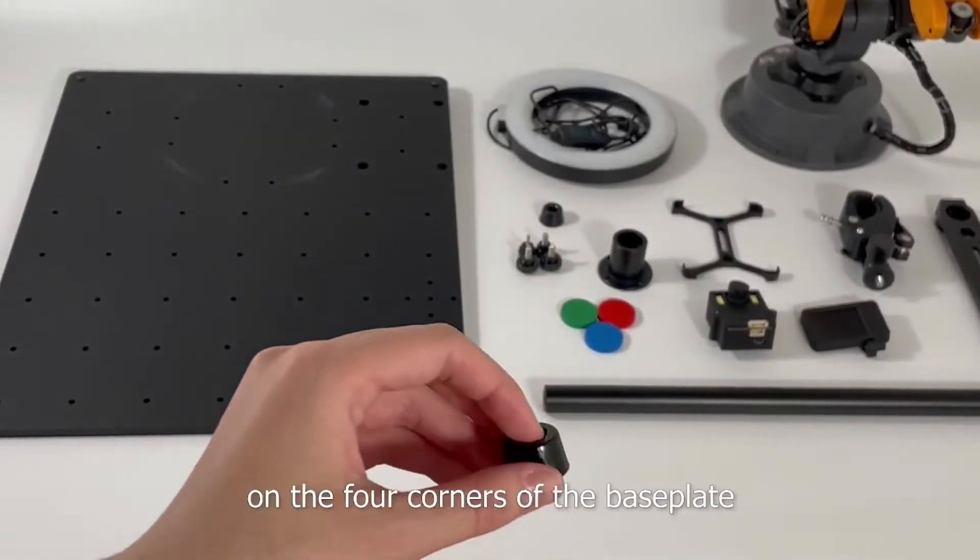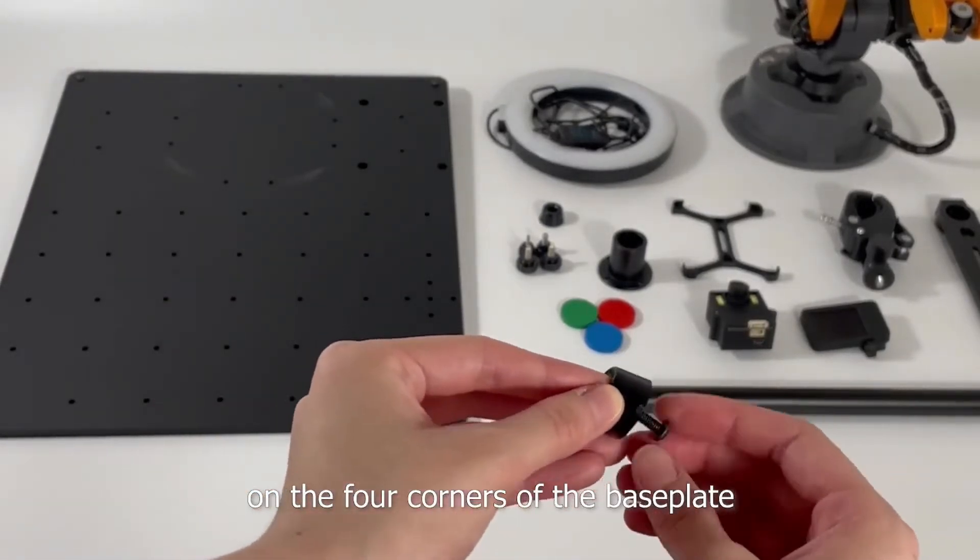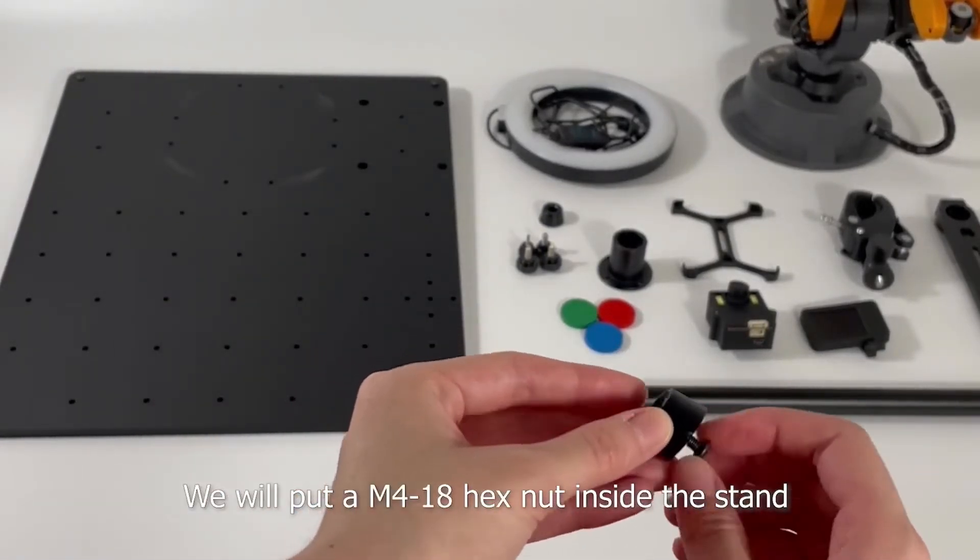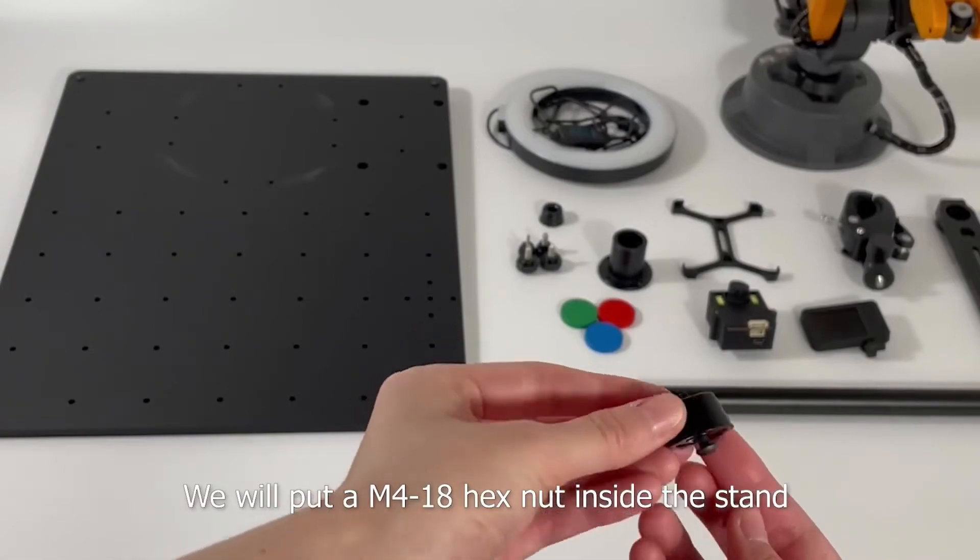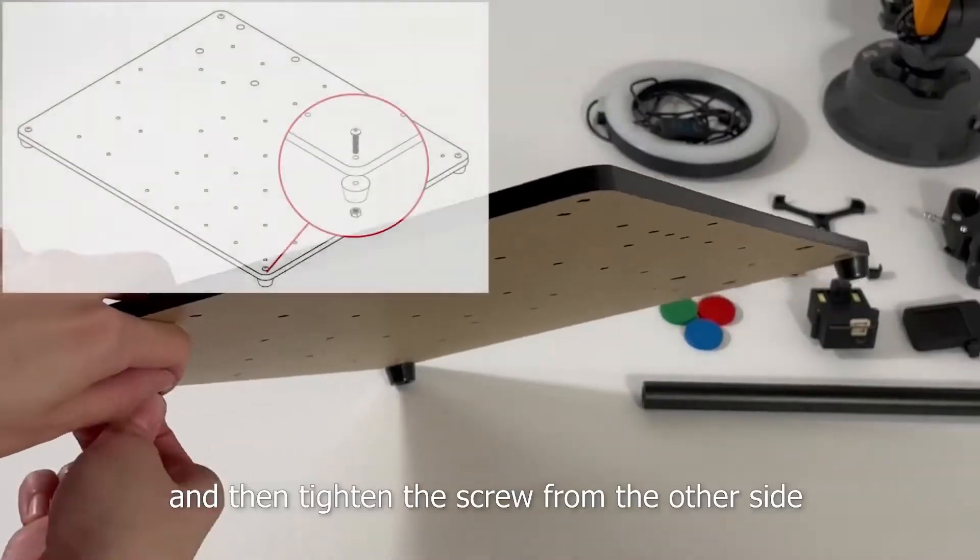First, we will install the rubber stand on the four corners of the base plate. We will put a M418 hex nut inside the stand and then tighten the screw from the other side.